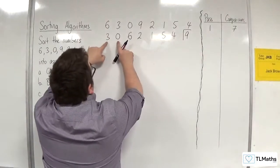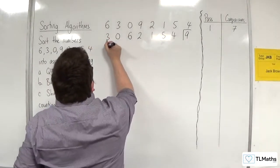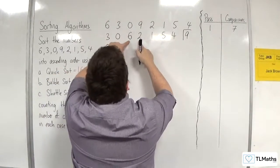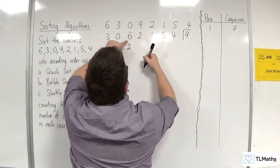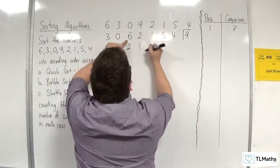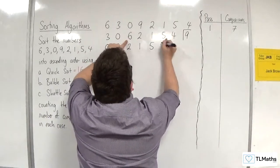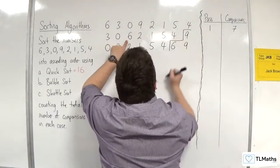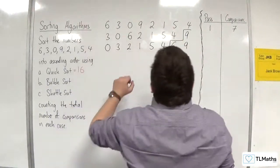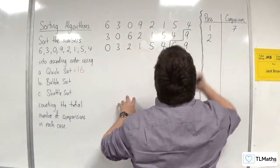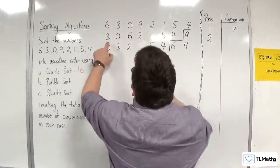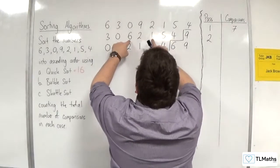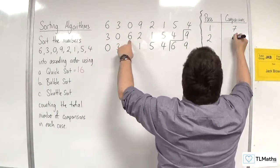We compare 3 and 0 — 3 is larger than 0. Then 3 and 6 — 3 is not larger than 6. Then 6 and 2 — 6 is larger. 6 and 1 — 6 is larger. 6 and 5, then 6 and 4 — 6 bubbles to the top. So in the second pass, we made 6 comparisons.